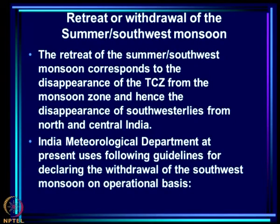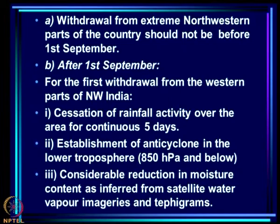The retreat of the summer or southwest monsoon corresponds to the disappearance of the TCZ from the monsoon zone and hence the disappearance of south-westerlies from north and central India. India Meteorological Department uses the following guidelines for declaring withdrawal of the southwest monsoon: withdrawal from extreme north-western parts of the country should not be declared before 1st September, even if conditions suggest it has withdrawn.